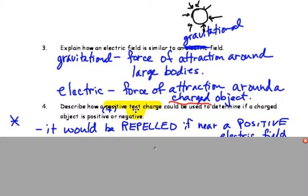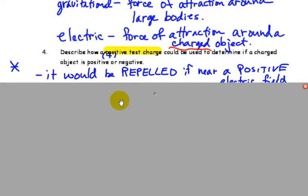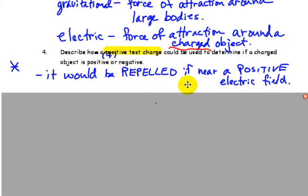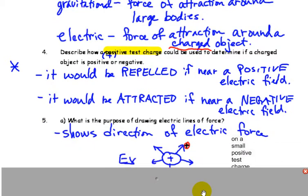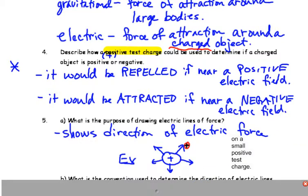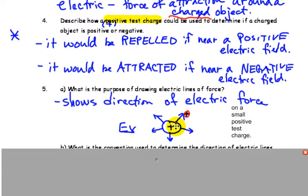Classically, a positive test charge is used to determine if there is an electric field present and what kind of electric field, whether it's positive or negative. So, if you put a positive test charge in a region and that positive test charge is repelled, that means that that electric field must be positive, because like charges repel. But if we put that positive test charge in a region and it's attracted to an object, that object must be exhibiting a negative electric field, because opposites attract.